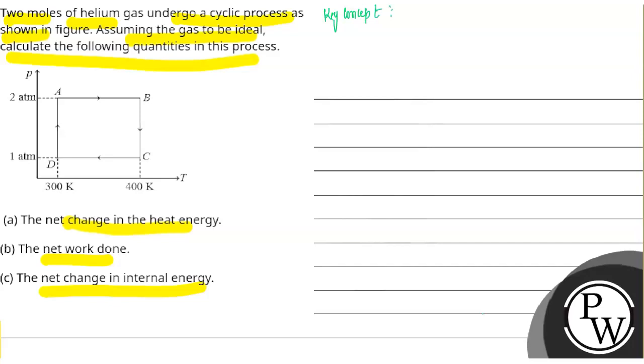The key concept will be cyclic process. Cyclic process is any process in which we can see all the processes like isochoric, isothermal, adiabatic. You get to see all the processes in a cycle when it is completely converted. So we call it cyclic process. That's the basic key concept. Then you will see which process is going according to that.